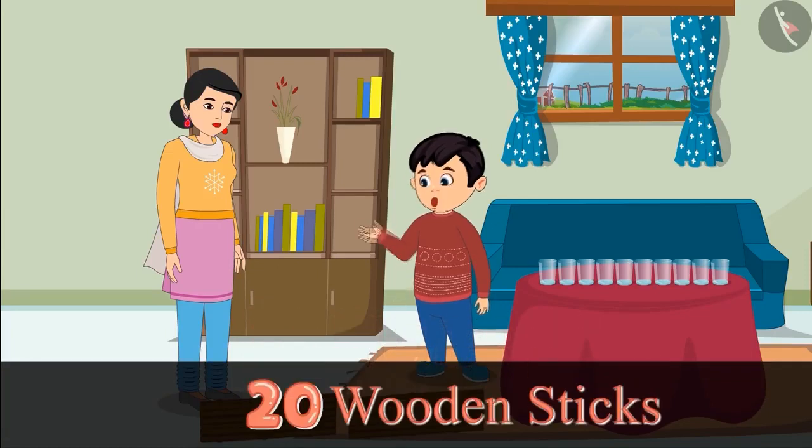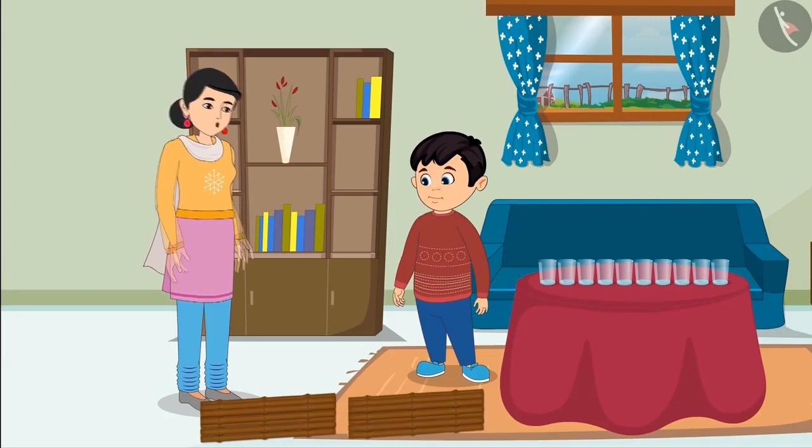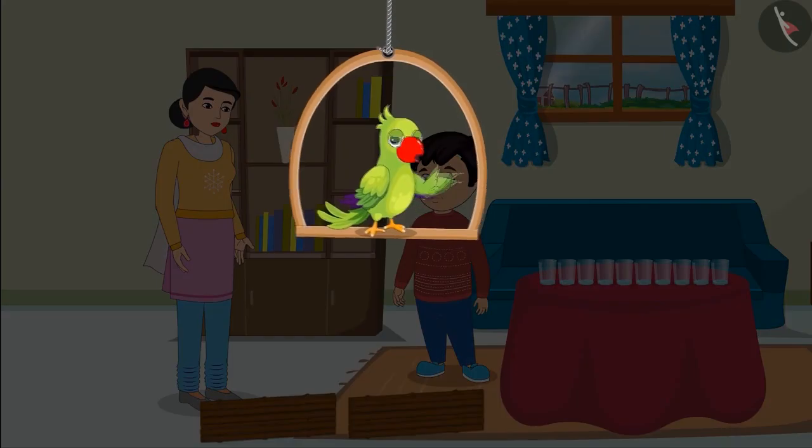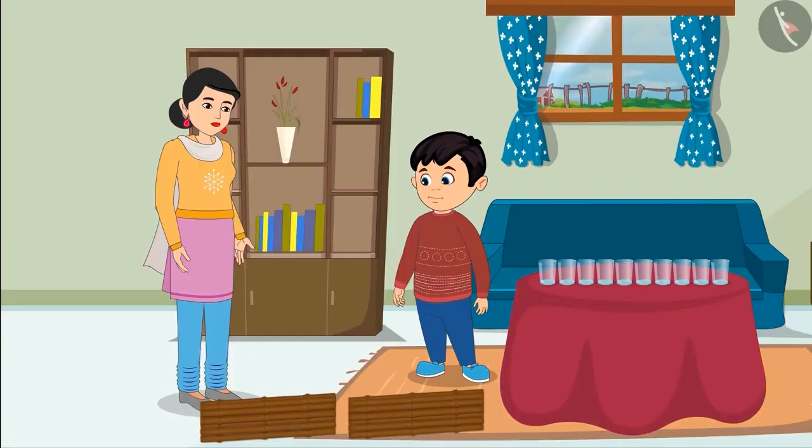That means I got 20 wooden sticks. Yes Choto, you are absolutely correct. Now go and wash your hands. You also count the number of objects around by making bundles of 10.